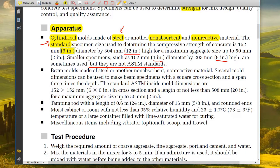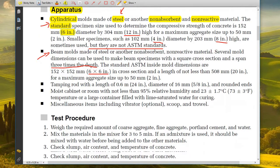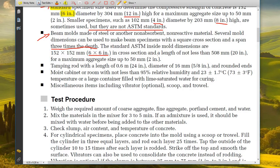For the beam molds, they're made of steel or another non-absorbent, non-reactive material. Several mold dimensions can be used to make beam specimens with a square cross section and span three times the depth. The standard ASTM inside mold dimensions are 6 by 6 inches in cross section and a length of not less than 20 inches. This is the standard we have in our lab.